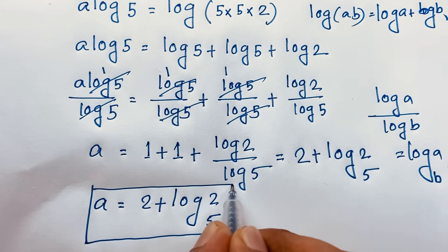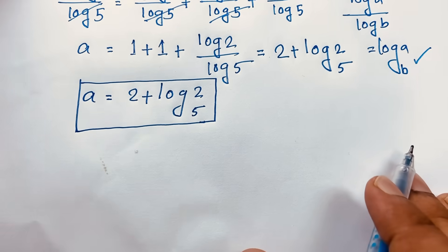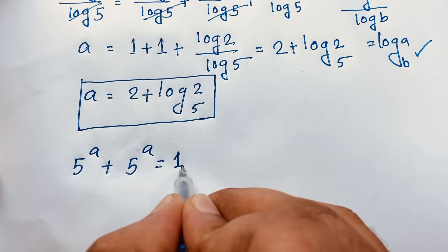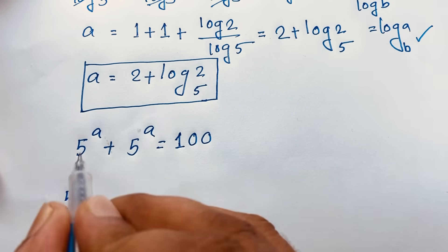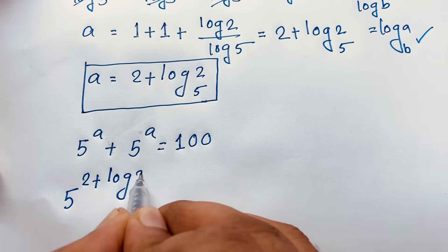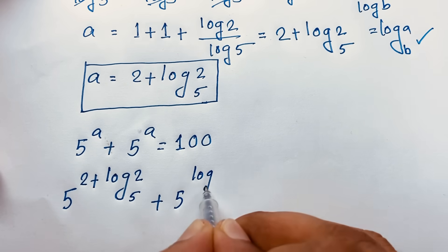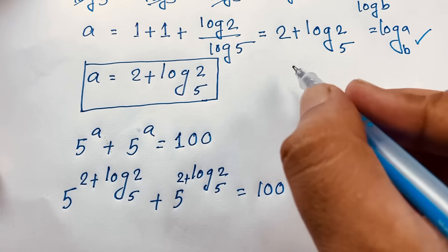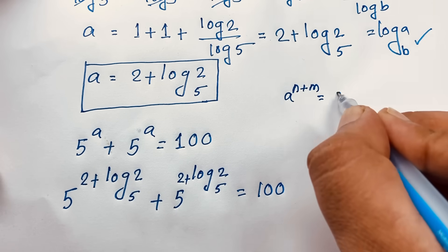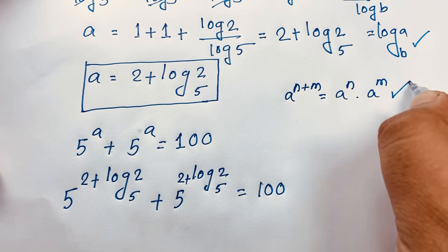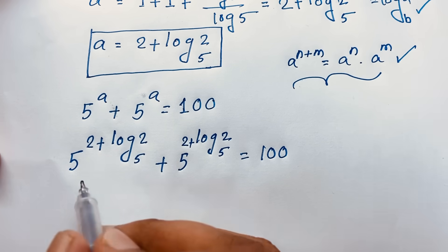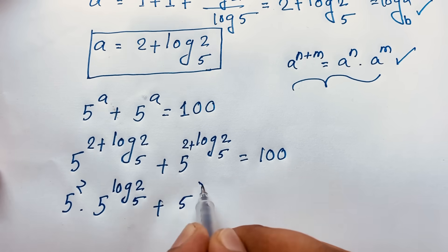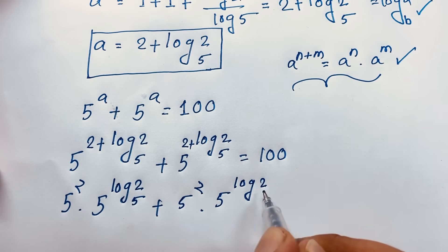Now let's check our question. It will be 5 to the power A plus 5 to the power A is equal to 100. At this point, here is 5 to the power A where A is 2 plus log 2 base 5, plus 5 to the power 2 plus log 2 base 5, is equal to 100. Now, using the property A to the power N plus M equals A to the power N times A to the power M, I can see 5 to the power 2 times 5 to the power log 2 base 5.